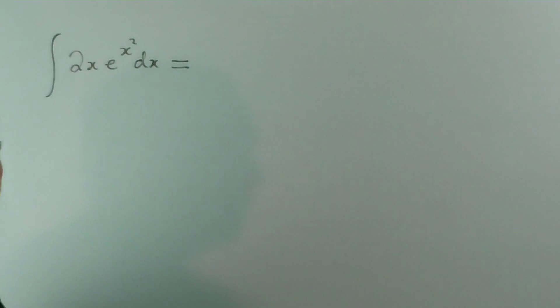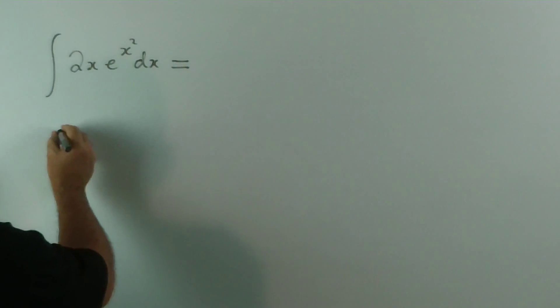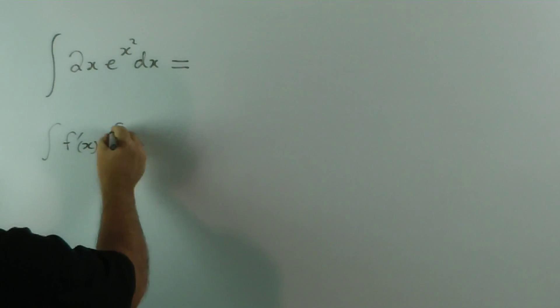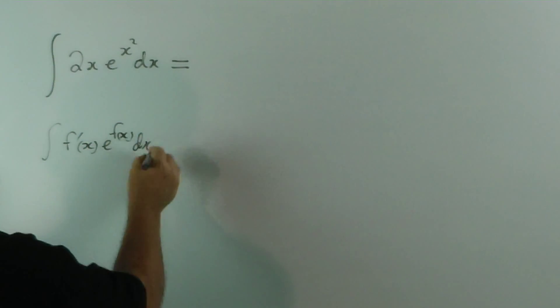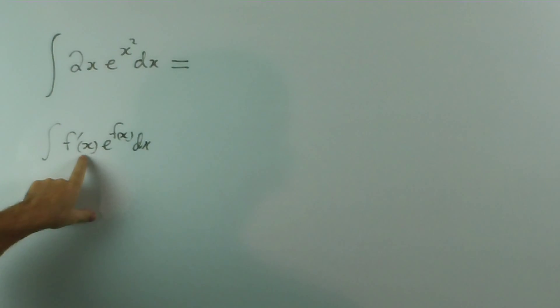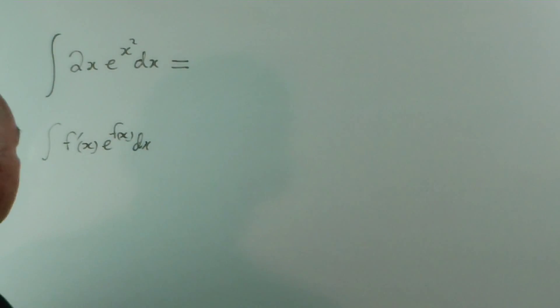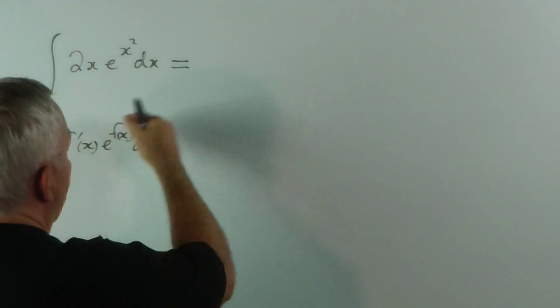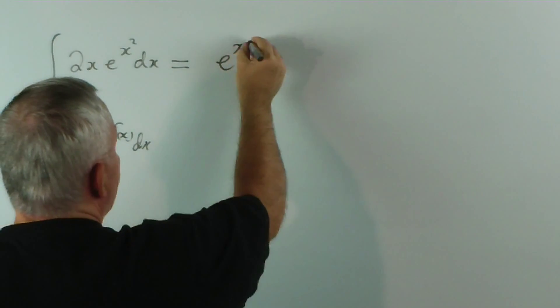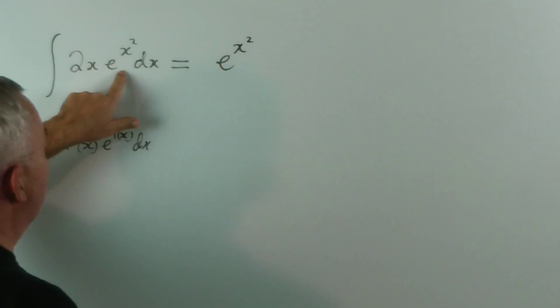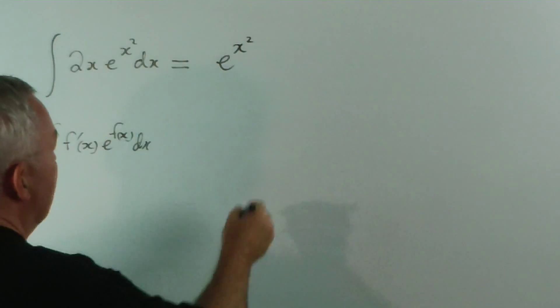This is perfect. This is the pattern: the integral of f dash x times e to the f x dx. Exponential with the derivative of the function out the front. And it just simply means the integral is e to the x squared. It's that original function, plus c.